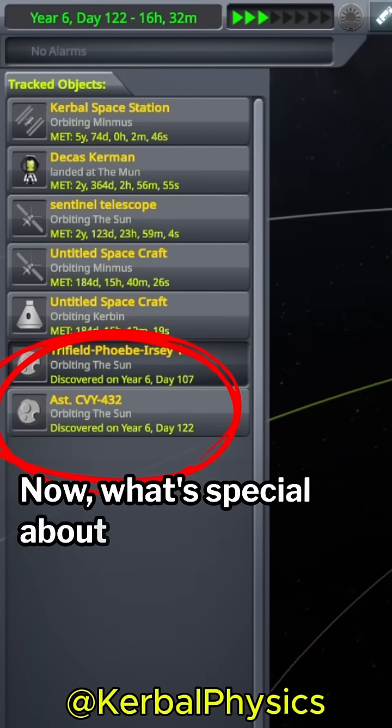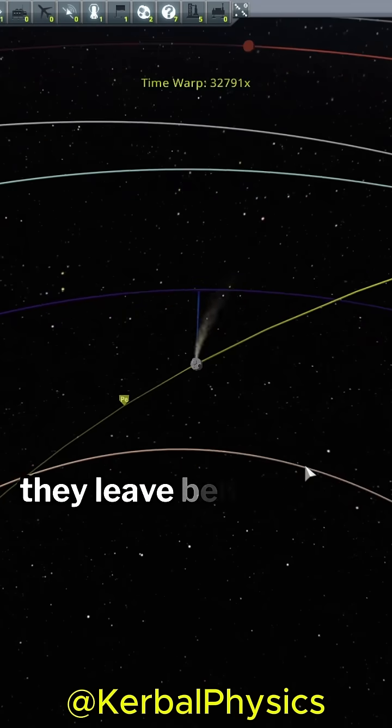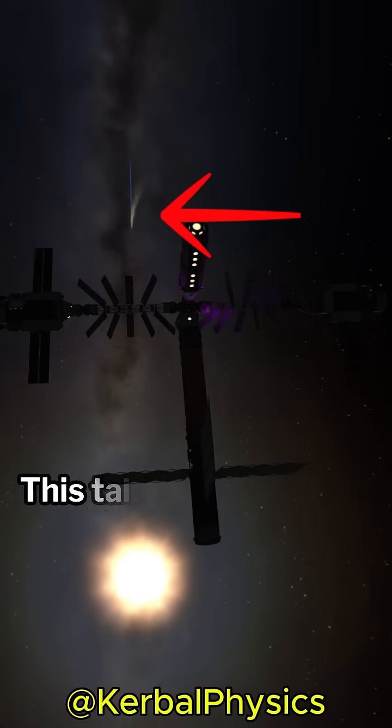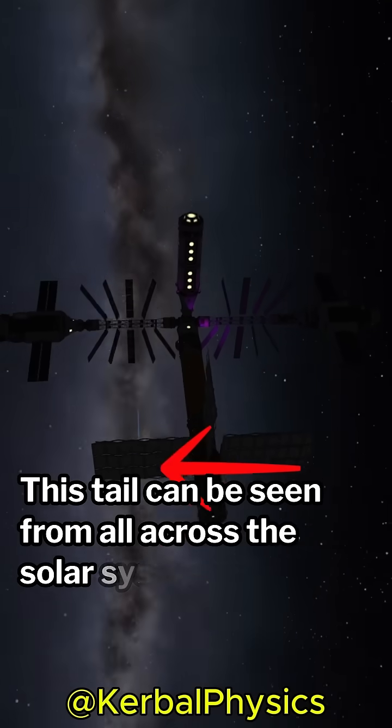Now, what's special about comets is the beautiful tail they leave behind them as they pass near the sun. This tail can be seen from all across the solar system.